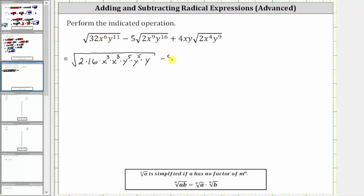Then we have minus five times the square root of two. X to the ninth is not a perfect square factor, but x to the eighth is. Let's write x to the ninth as x to the fourth times x to the fourth times x. And then we have y to the sixteenth, which is a perfect square factor because y to the sixteenth is equal to y to the eighth times y to the eighth.